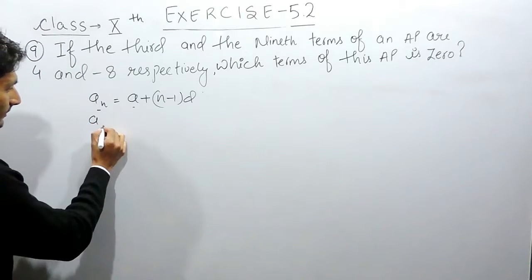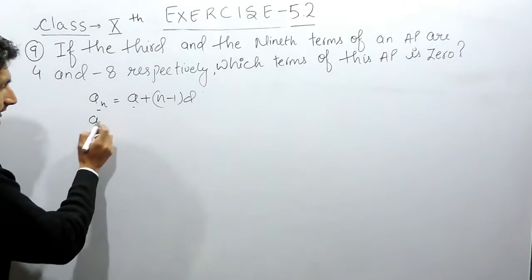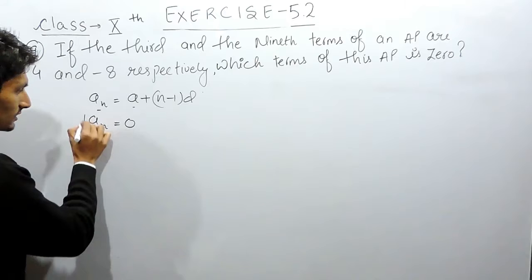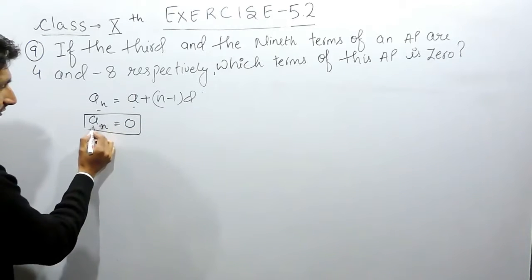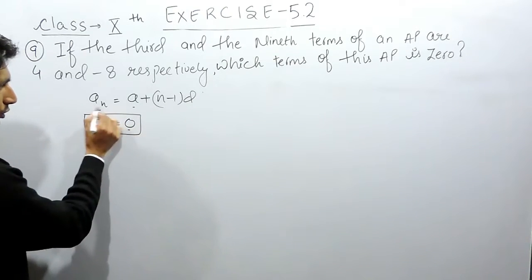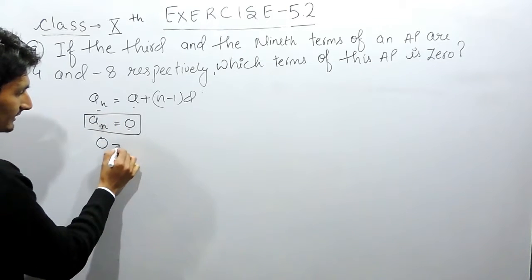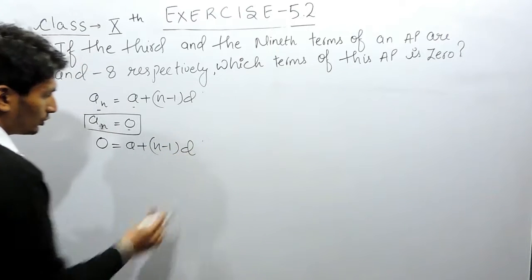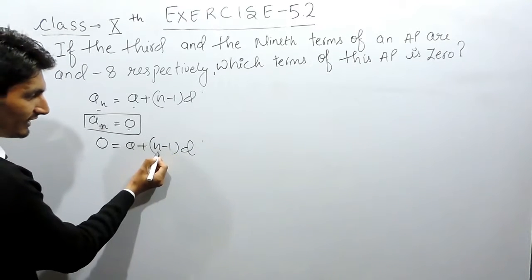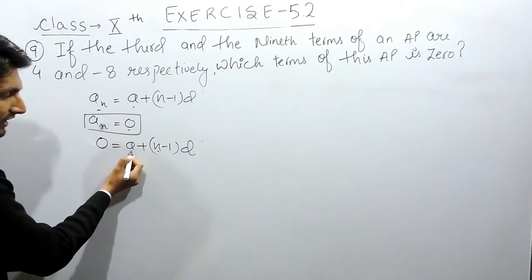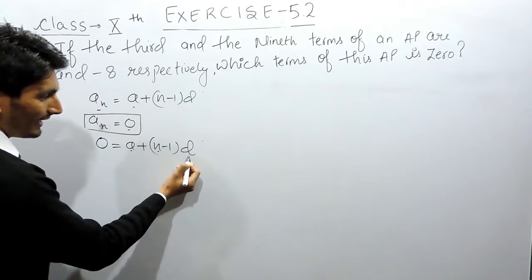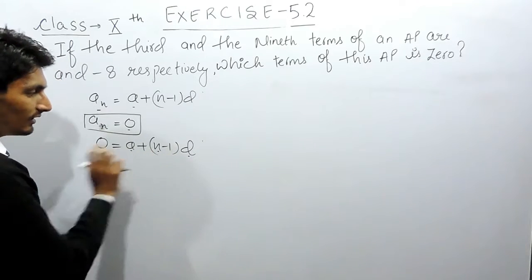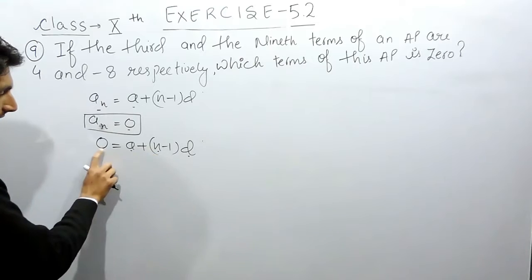Here the nth term we have to find is equals to 0. So clearly, if the nth term is 0, we can write: 0 equals a plus n minus 1 into d. Solving this equation will tell us which term this is, but for that we need to know the values of a and d.